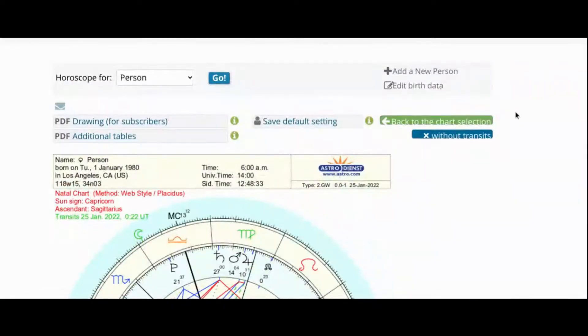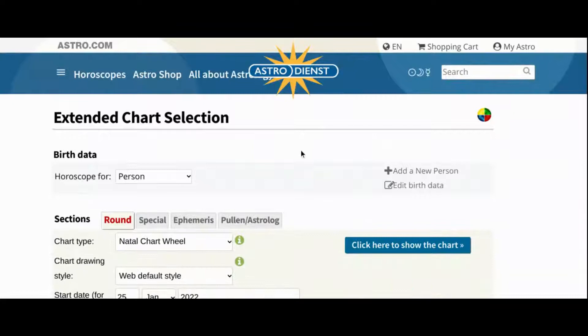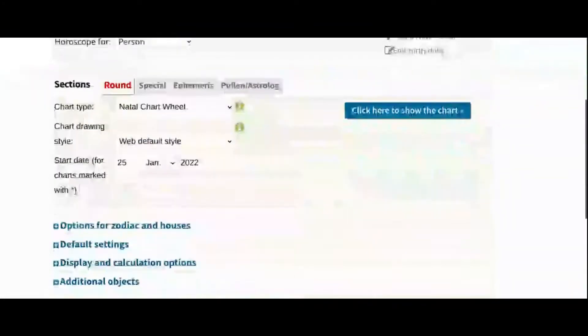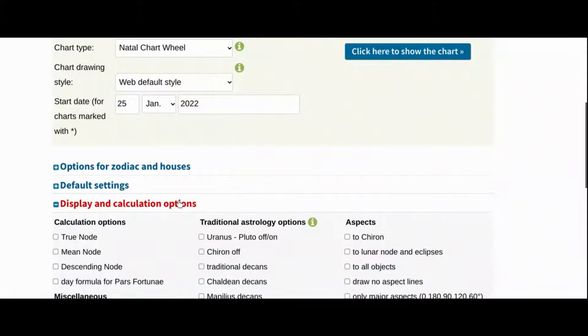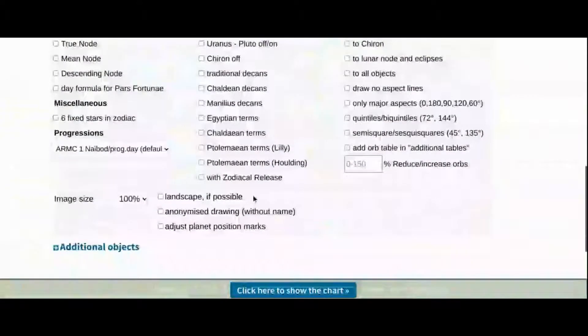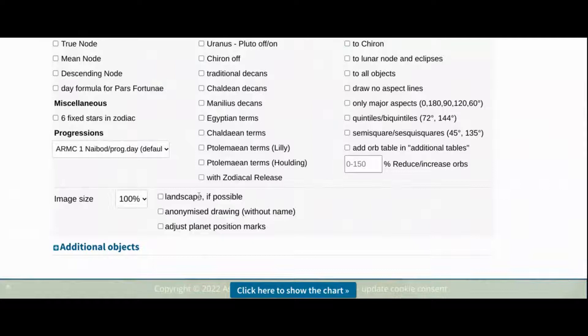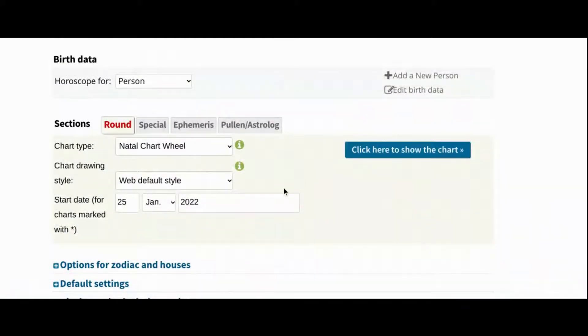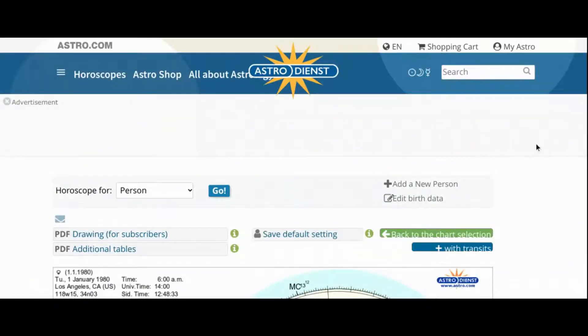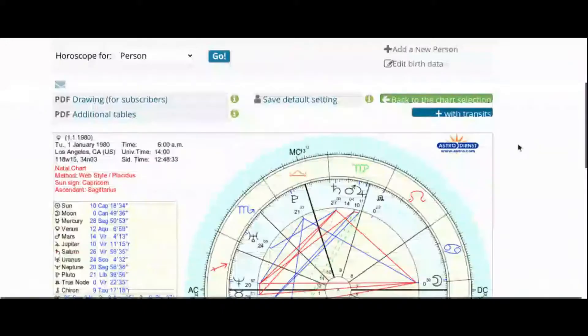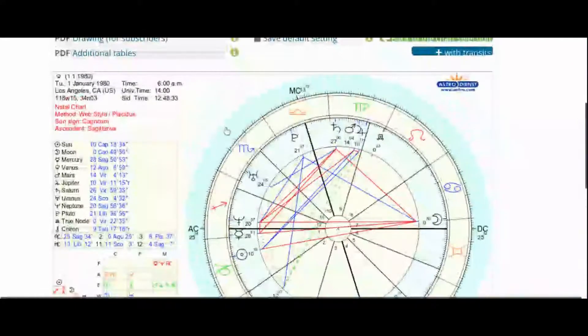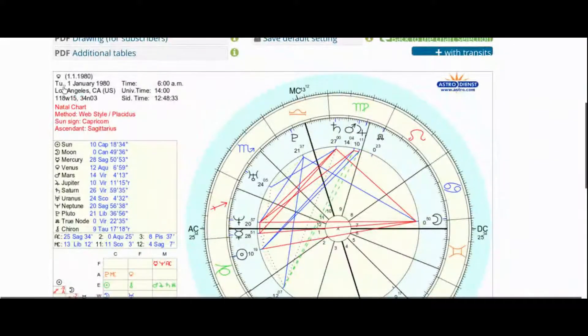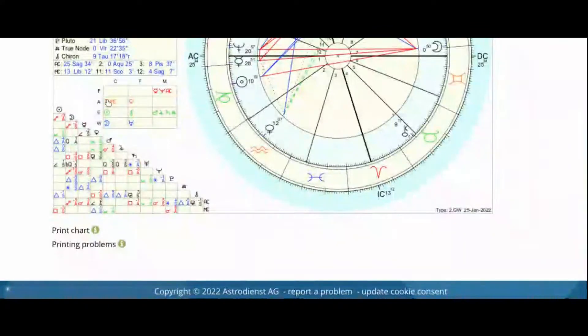If you prefer horizontal, you can select Landscape in Display and Calculation Options in Extended Chart Selection. You can also create the chart anonymized so you won't have the name if it's a chart you're sharing, and you can see it's right below. Then create the chart, and here it is in landscape. In landscape, the wheel is on the right, and on the left is the location of the planets and houses, and then the table of element and quality, and then the aspect grid.